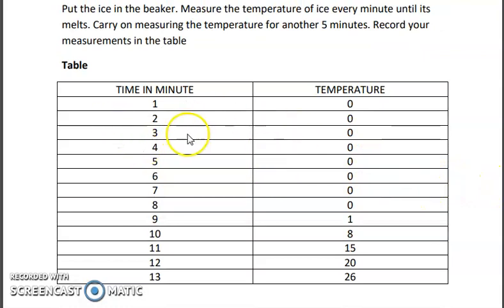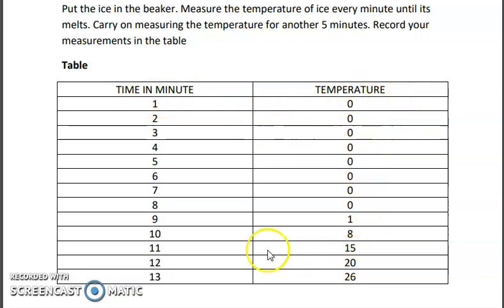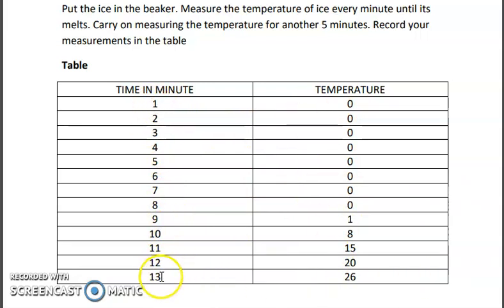Here is the table. In the first column you will note the time in minutes, and in the second column you will write down the temperature. After approximately 10 to 13 minutes, the ice will gain room temperature.